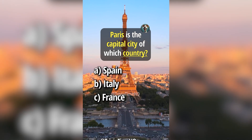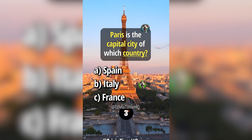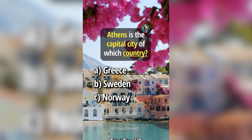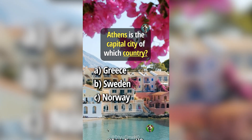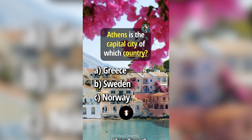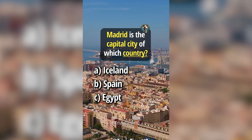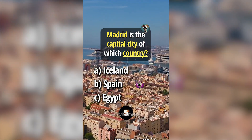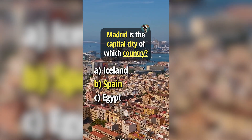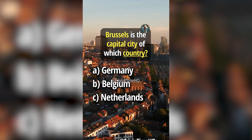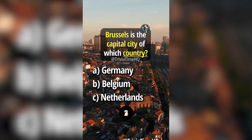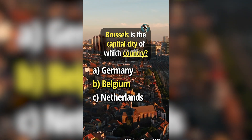Paris is the capital city of which country? Answer C, France. Athens is the capital city of which country? Answer A, Greece. Madrid is the capital city of which country? Answer B, Spain. Brussels is the capital city of which country? Answer B, Belgium.